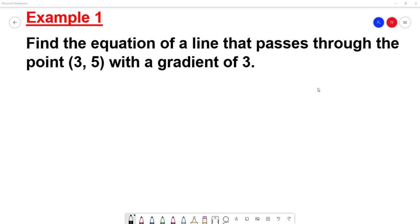In this video, we're going to look at the equation of a straight line. So this question says, find the equation of a line that passes through the point (3, 5) with a gradient of 3.